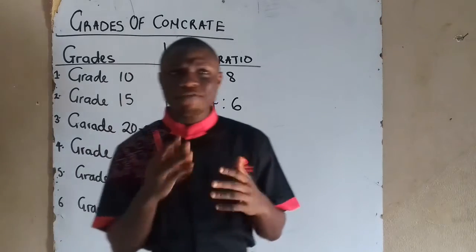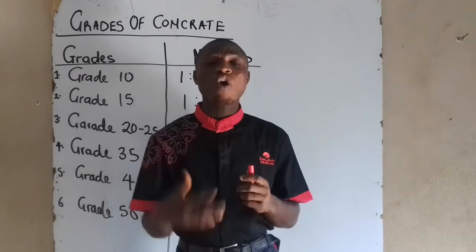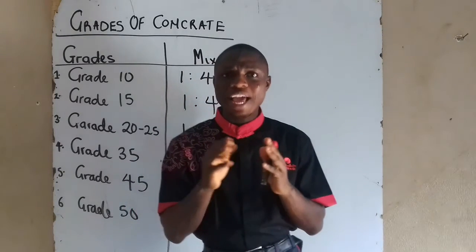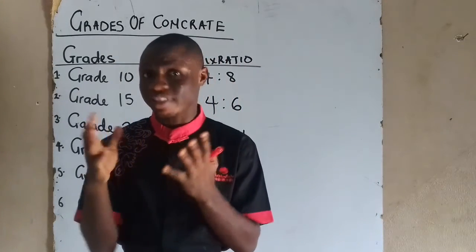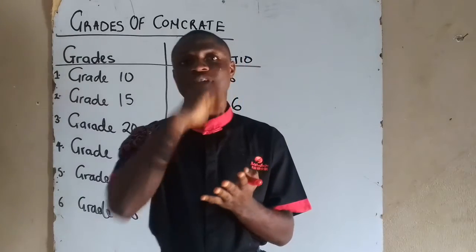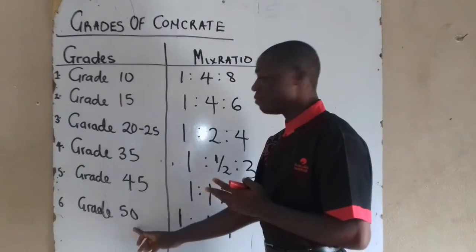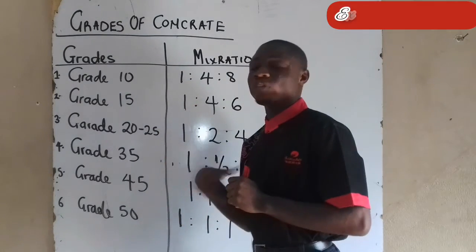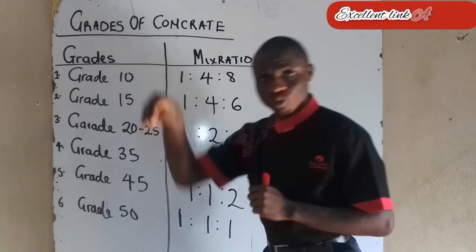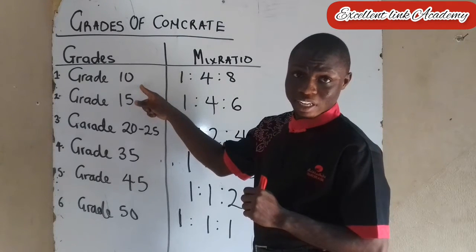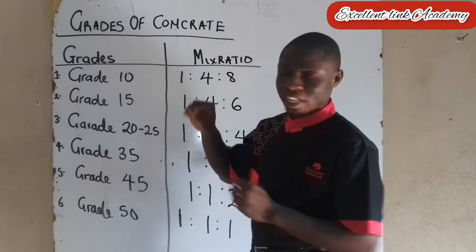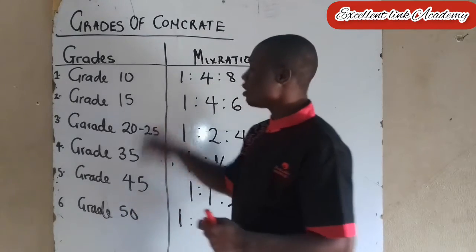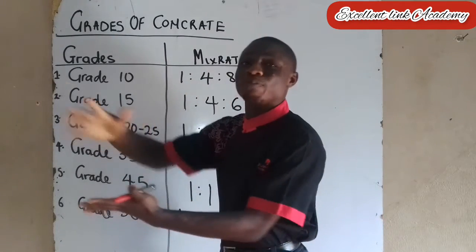Every concrete is prepared or designed with a particular grade. Every grade has its differences. For instance, we have grade 10 and grade 15. 10 is smaller while 50 is bigger. If I design a concrete of grade 10 and apply a load, and that load is too much, the concrete will crack. But if I use grade 15, the concrete will bear the load.